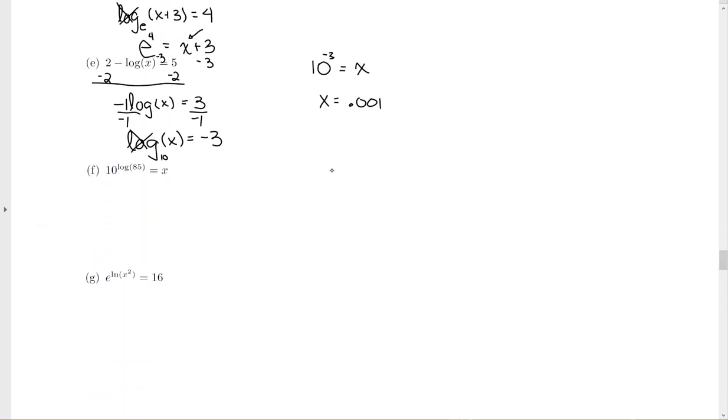These next two rely on this property that was on the previous page of your note packet. A raised to the log base A of x power is just x. If these bases are the same, everybody cancels, and it's just the argument that it's equal to. We're going to talk more about inverse functions and why that is. But for now, we can look at it as a problem like this. 10 raised to the log base 10 of 85. Notice I put that base 10 in there because it wasn't written in. These cancel out, and I'm left with 85.